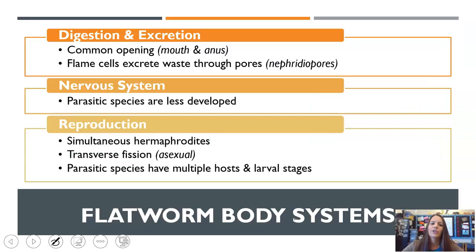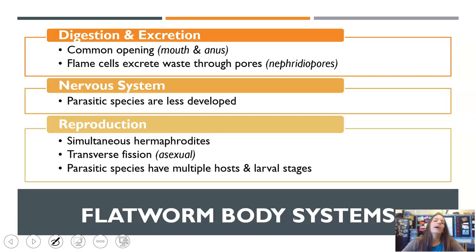Let's talk about the body system. Flatworms typically have a common opening, which means one opening serves as both the mouth and the anus. However, waste is excreted through something called nephridiopores, and there are flame cells around these pores that help excrete that waste. Their nervous system is pretty basic — they have some sort of cerebral ganglion and nerve cords — but parasitic species are going to be less developed because they rely on their host and don't need to live freely.